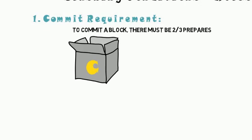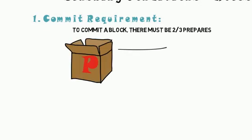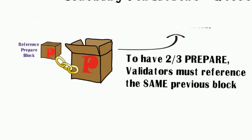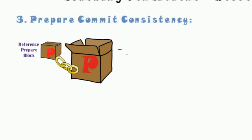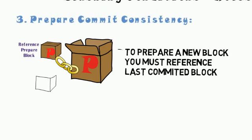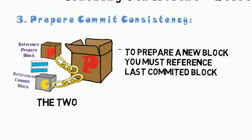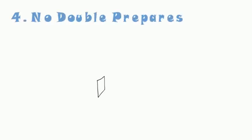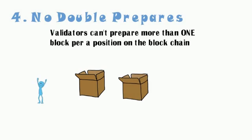First, the commit requirement: to commit a block, there must be at least two-thirds prepares. In order to have two-thirds prepares, at least two-thirds of validators must reference the same prepare block. Also, in making a prepare, validators must reference their last commit block, which should be consistent with the reference of their last prepare block.